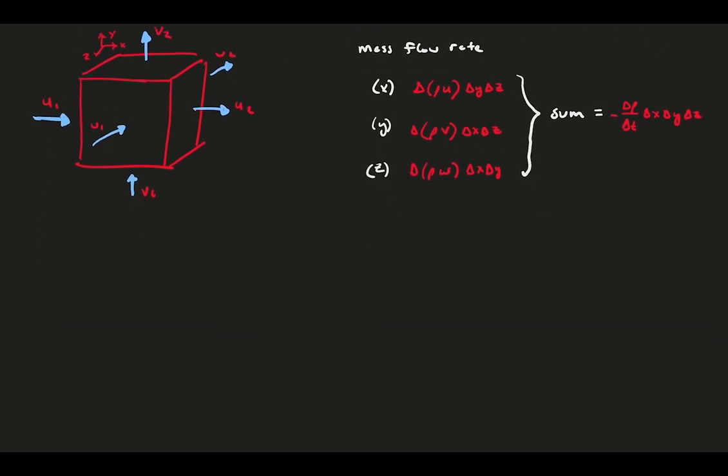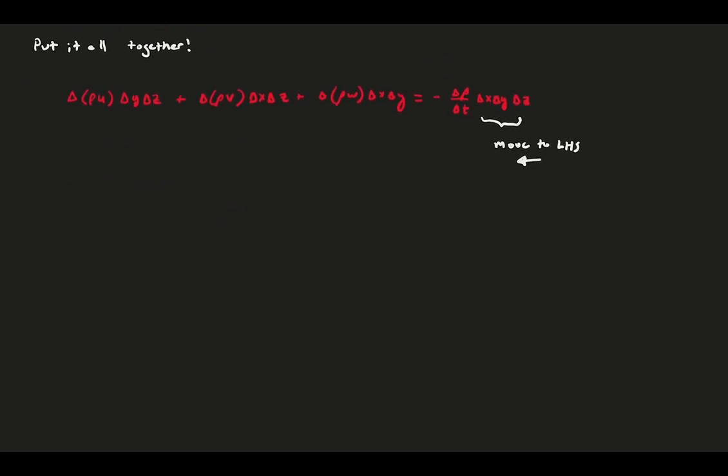Let's take a second and put all the terms together into a single equation and then move around the delta x, delta y, and delta z terms to simplify. Now, we seem to be getting closer to a final representation of our conservation of mass.